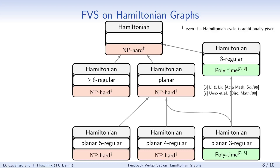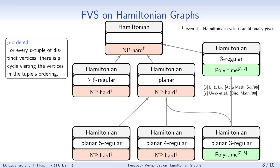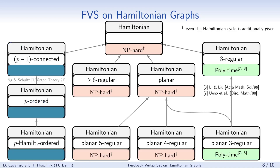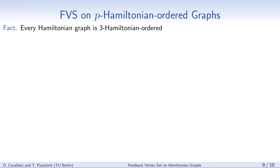Here is an overview of our results. Beyond the graph classes presented, we consider two more. The first is the class of p-order graphs, where for every p-tuple of distinct vertices there is a cycle visiting the vertices in the tuple's ordering. The second is the class of p-Hamiltonian-ordered graphs, where for every p-tuple of distinct vertices there is a Hamiltonian cycle visiting them in the tuple's ordering. Note that p-order graphs are (p-1)-connected. We prove feedback vertex set remains NP-hard on all these graph classes, even if a Hamiltonian cycle is additionally given.